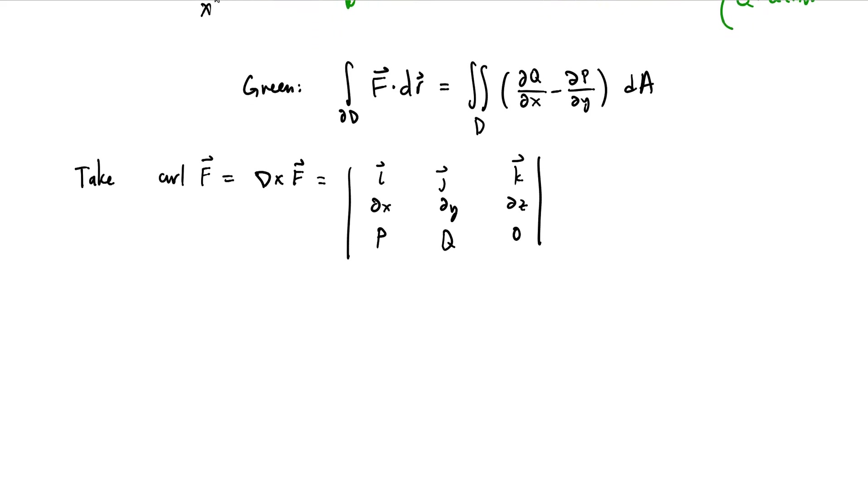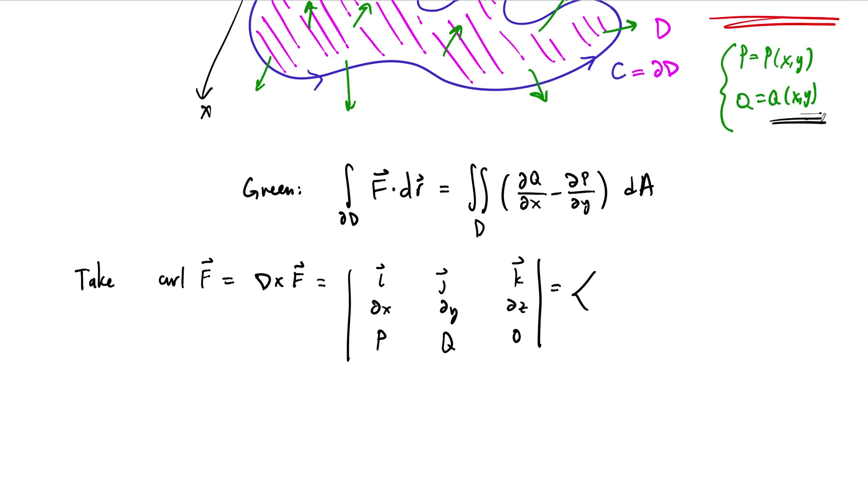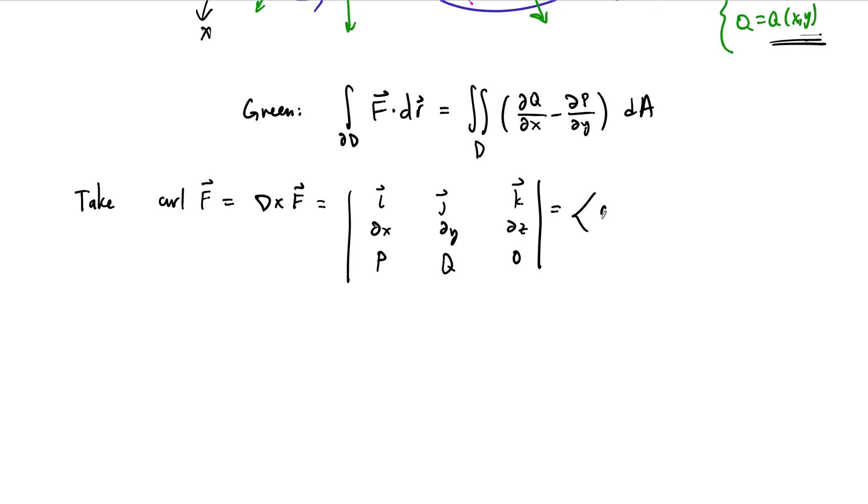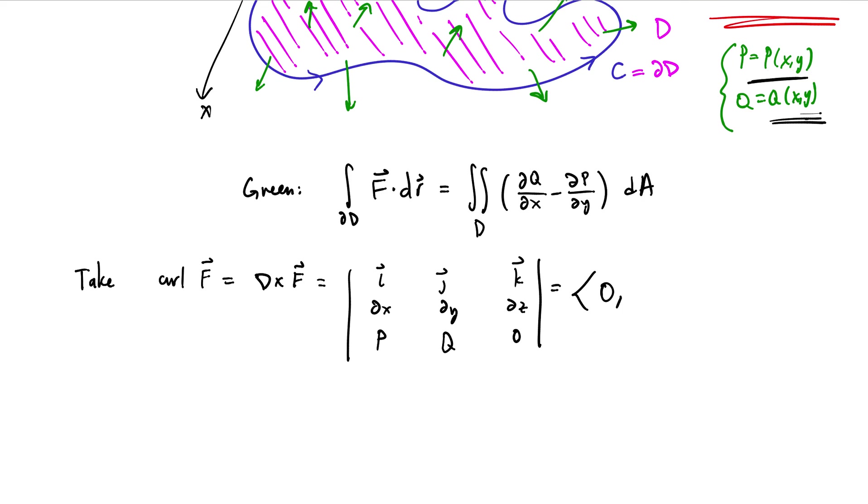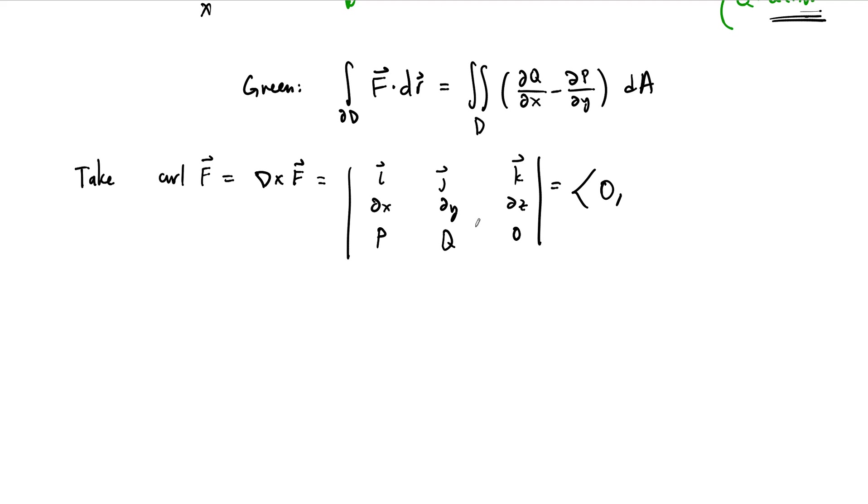So what we end up with then, is when we try to write out this curl, we are going to see that the first component is zero minus the Z derivative of Q. But Q is a function that does not depend on Z, so its derivative is zero. So the first component of our curl is zero. We move to the second component. Same thing happens. dz dP, exact same reasoning. P does not depend on Z, so that's zero. And then d0/dx, that's zero.